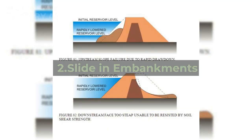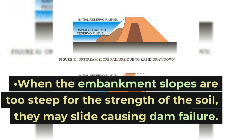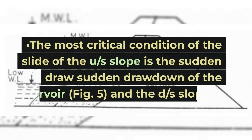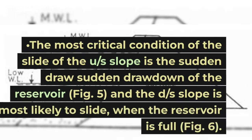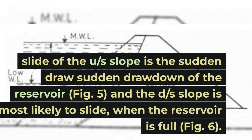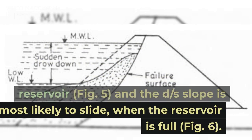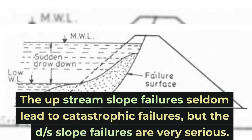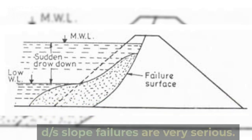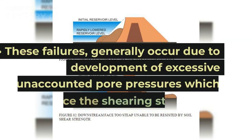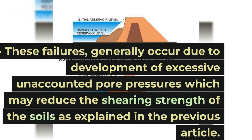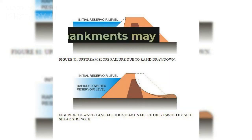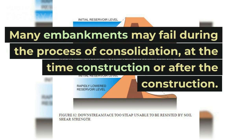2. Slide in Embankments. When the embankment slopes are too steep for the strength of the soil, they may slide, causing dam failure. The most critical condition for the slide of the upstream slope is the sudden drawdown of the reservoir, and the downstream slope is most likely to slide when the reservoir is full. The upstream slope failures seldom lead to catastrophic failures, but downstream slope failures are very serious. These failures generally occur due to development of excessive unaccounted pore pressures which may reduce the shearing strength of the soils. Many embankments may fail during the process of consolidation, at the time of construction or after construction.